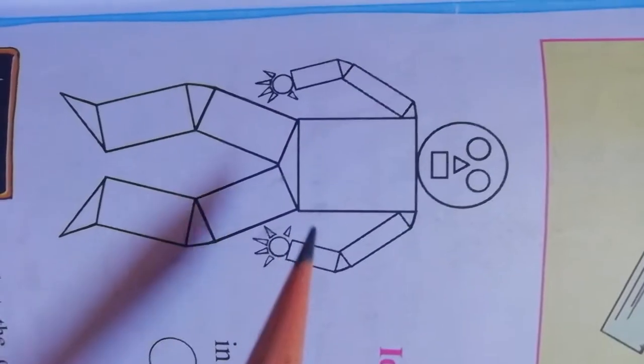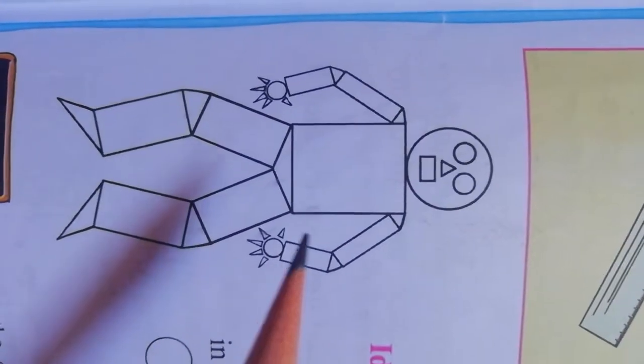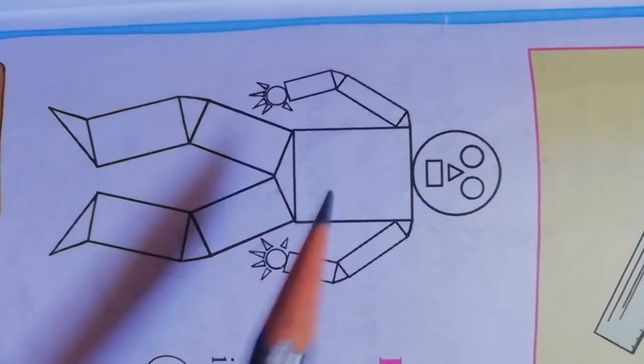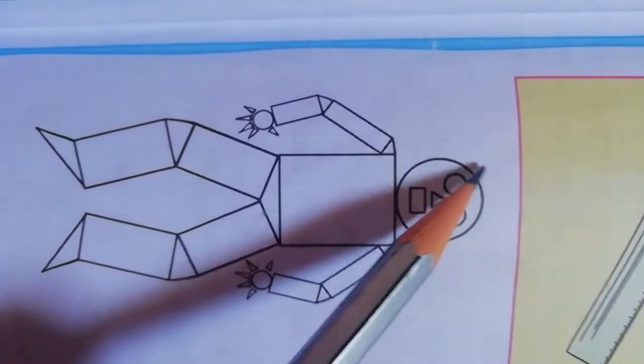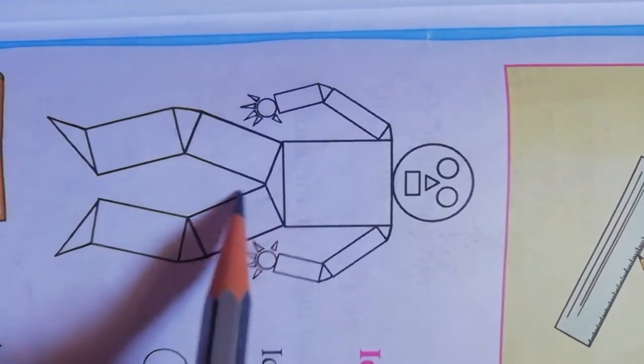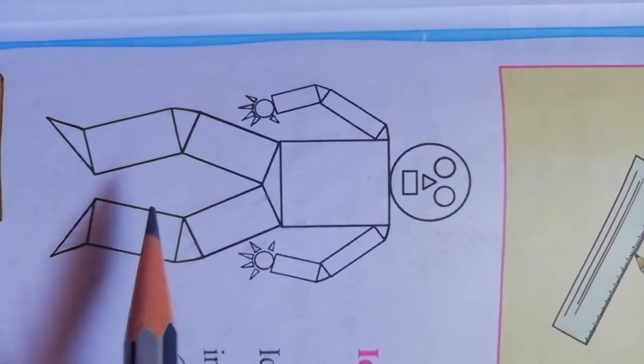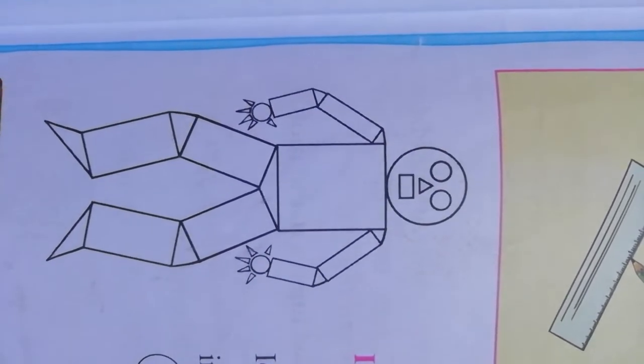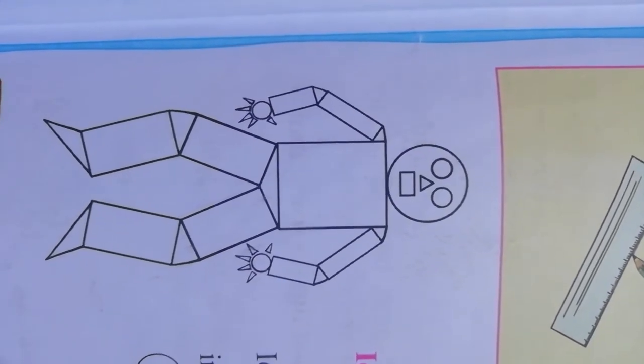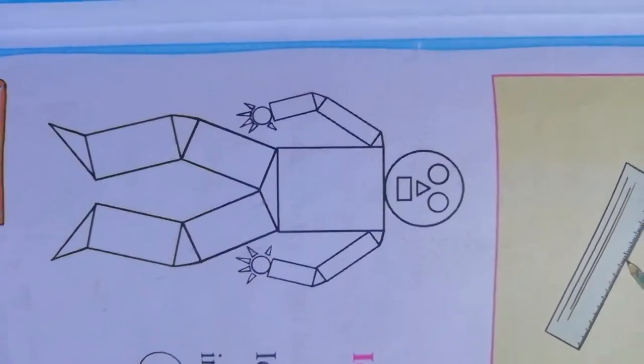Now students, see here. One picture has been given. In this picture, all the shapes have been used. Like see here, circle is there, triangle is there, here rectangle is there. So like this, you can draw drawings using different geometrical shapes and practice it. Thank you.